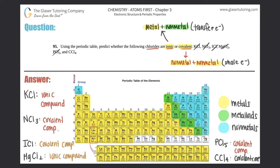So we have four covalent compounds: NCl3, ICl, PCl5, and CCl4. The ionic ones are KCl and MgCl2, because they both had a metal in them. This problem was pretty easy — just know how to use the periodic table and where your metals, metalloids, and nonmetals are, and you'll always be able to determine whether a compound is ionic or covalent.